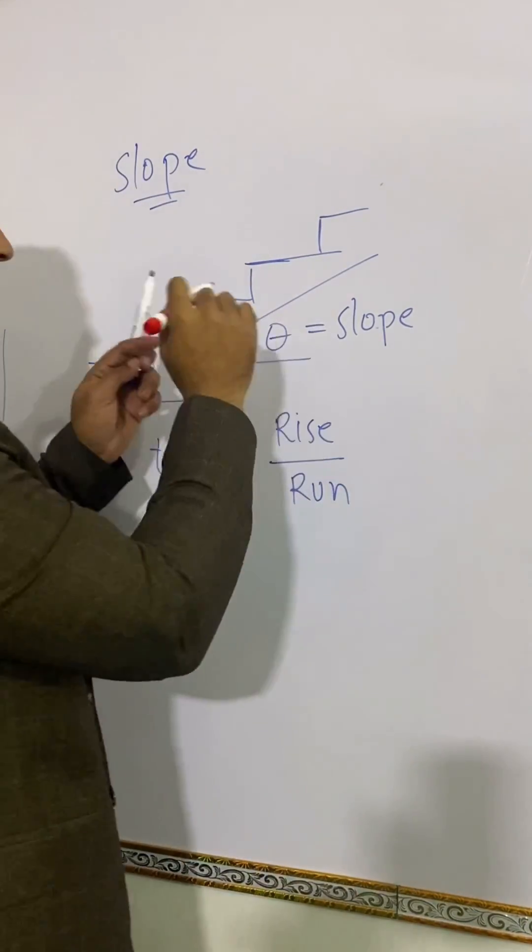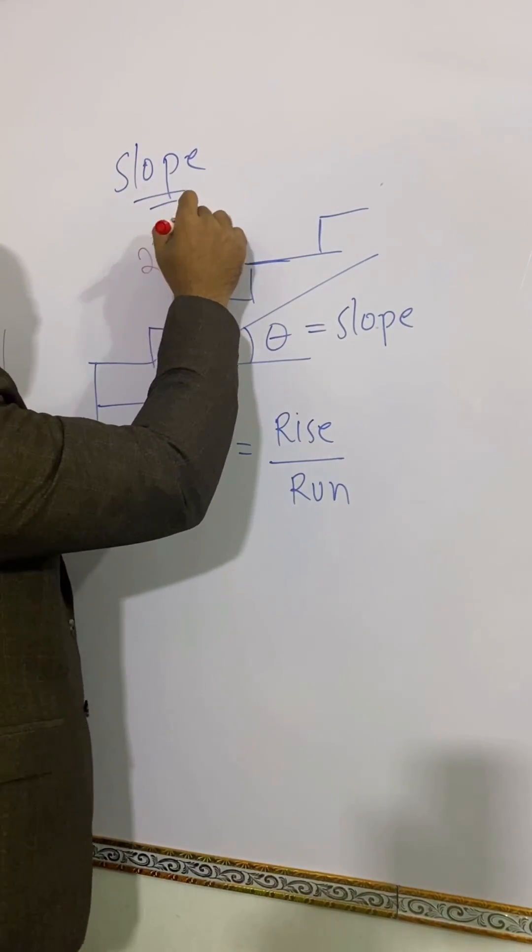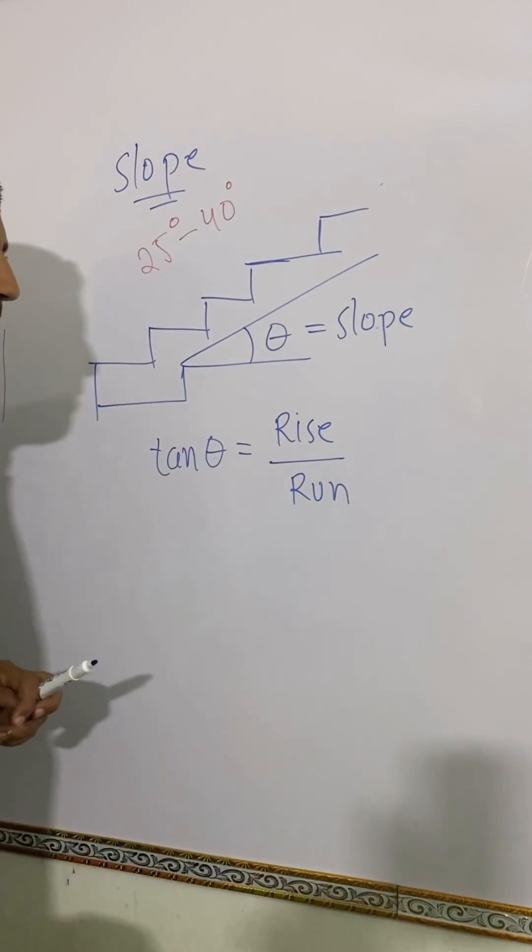Remember, the slope of the staircase must be from 25 degrees to 40 degrees for a comfortable stair.